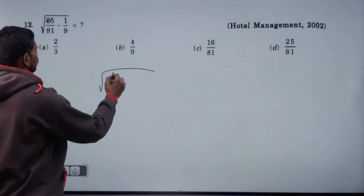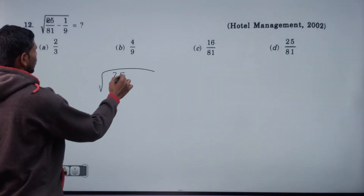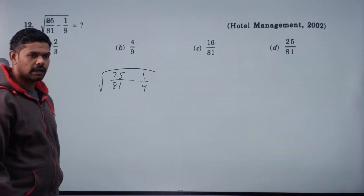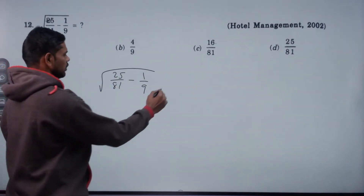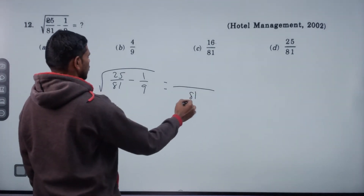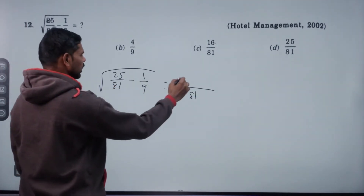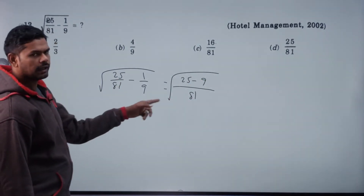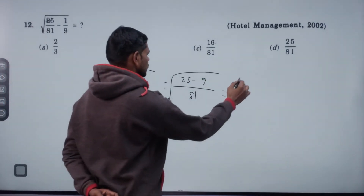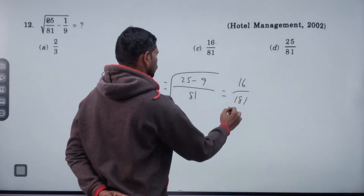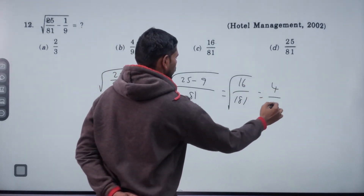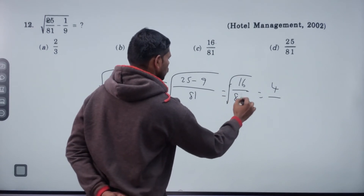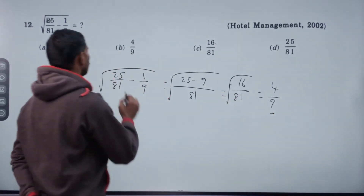Root of 25 by 81 minus 1. Simplify: LCM is 81. 25 minus 9 is 16 by 81. Root 16 value is 4. Root 81 value is 9. So answer is 4 by 9.